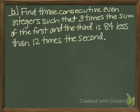Find three consecutive even integers such that 3 times the sum of the first and the third is 84 less than 12 times the second.